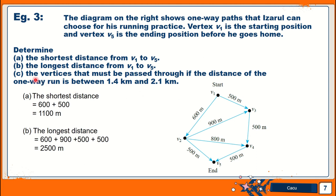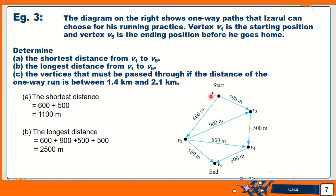For part C, find the vertices that must be passed through if the distance of the one-way run is between 1.4 kilometers and 2.1 kilometers. The 2,500 meter route is not in range, and the 1,100 meter route is also not in range. That leaves two routes: V1, V3, V4, V5 with 500 + 500 + 500 + 500 = 1,500 meters, and V1, V2, V4, V5 with 600 + 800 + 500 = 1,900 meters. Both fall within the range.